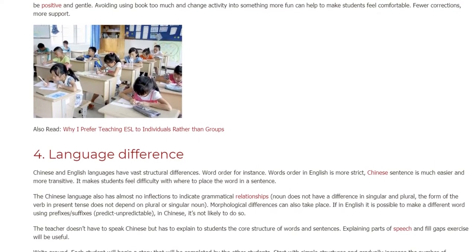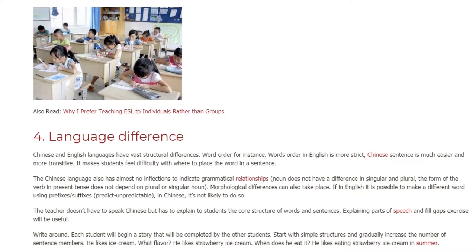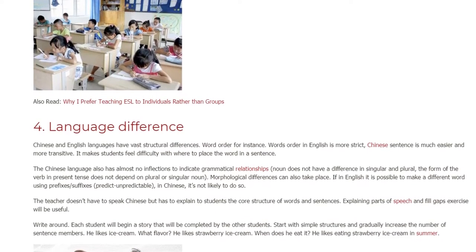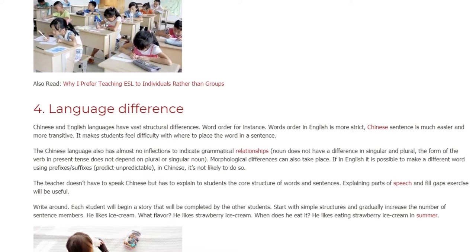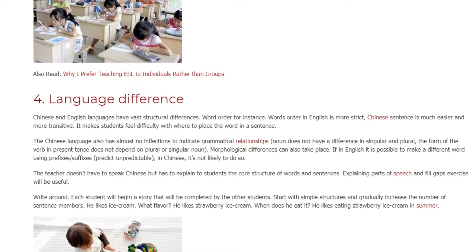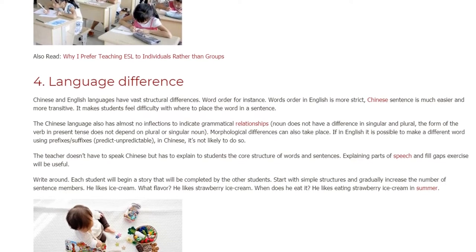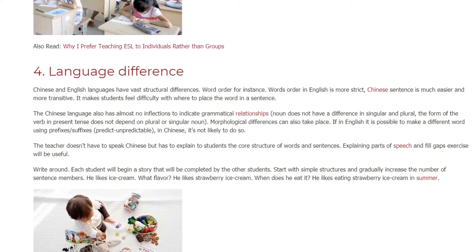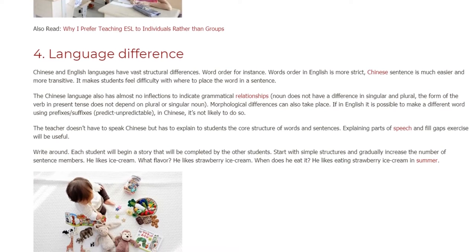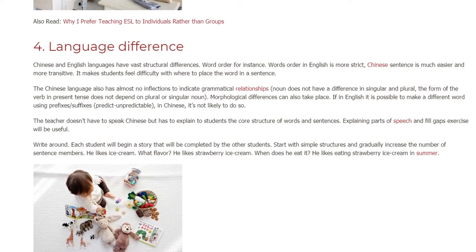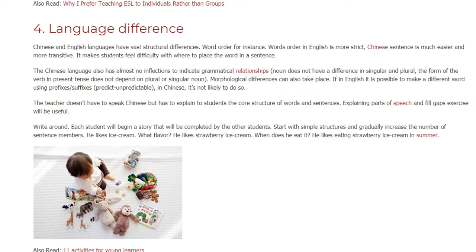The Chinese language also has almost no inflections to indicate grammatical relationships. Nouns do not differ in singular and plural, and the form of the verb in present tense does not depend on the noun being plural or singular. Morphological differences also apply — in English it is possible to make different words using prefixes and suffixes, like 'predict' and 'unpredictable,' but in Chinese it is not likely. The teacher doesn't have to speak Chinese but must explain the core structure of words and sentences. Explaining parts of speech and fill-in-the-gap exercises will be useful. A 'write around' activity — where each student begins a story completed by others — is also helpful. Start with simple structures and gradually increase sentence complexity.